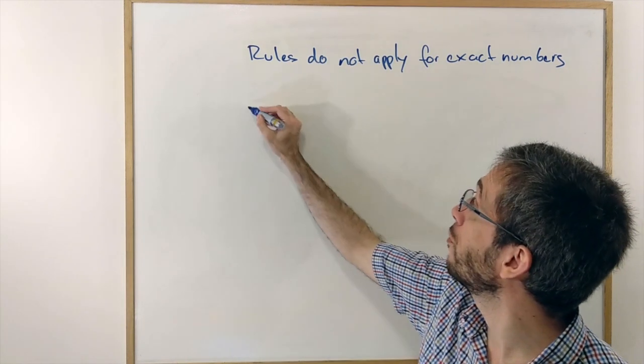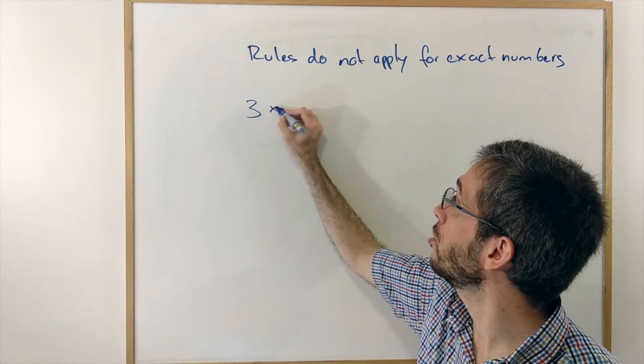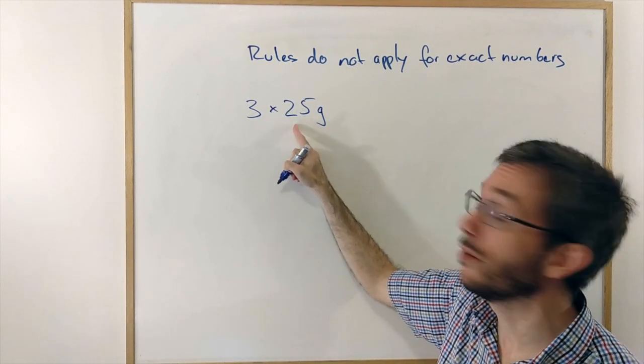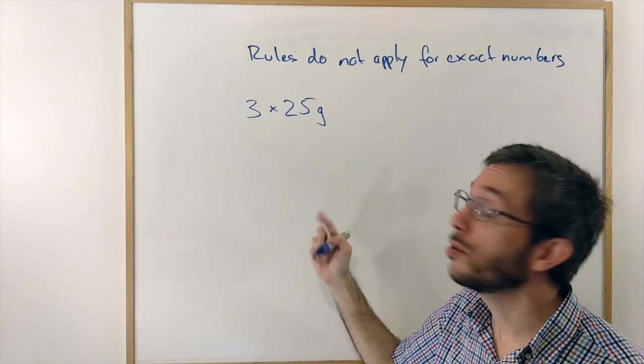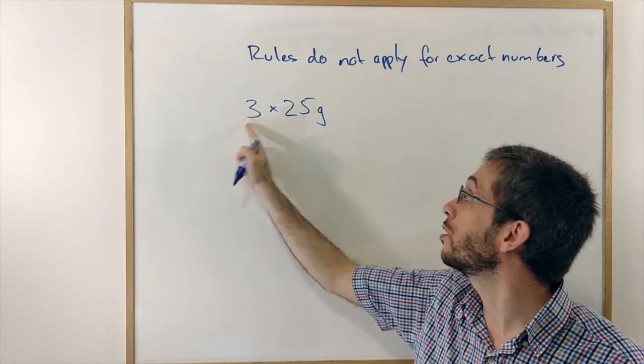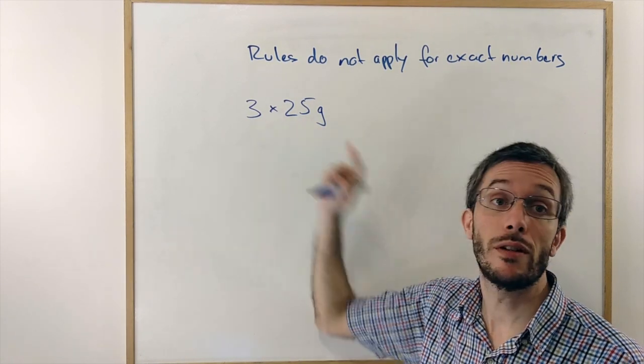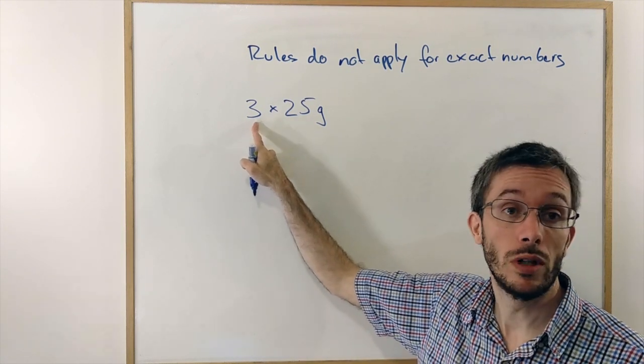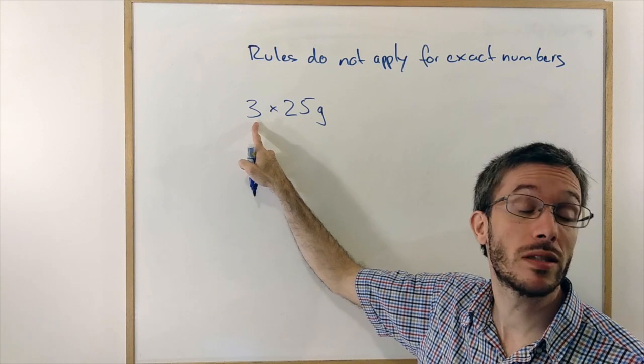So, for example, if we have 3 donuts, each of which has a mass of 25 grams with 2 significant figures. According to the significant figure rules, if we would take the significant figures of all numbers into account, it should be the lowest ones, so 1, so I should write the answer with one significant figure.